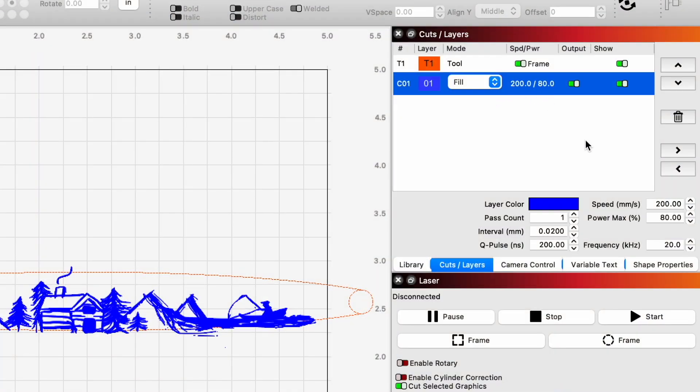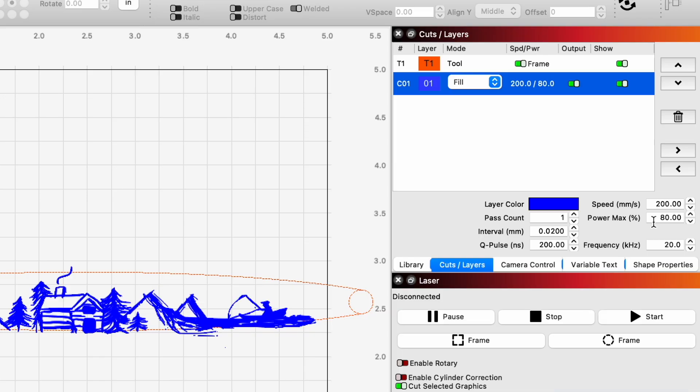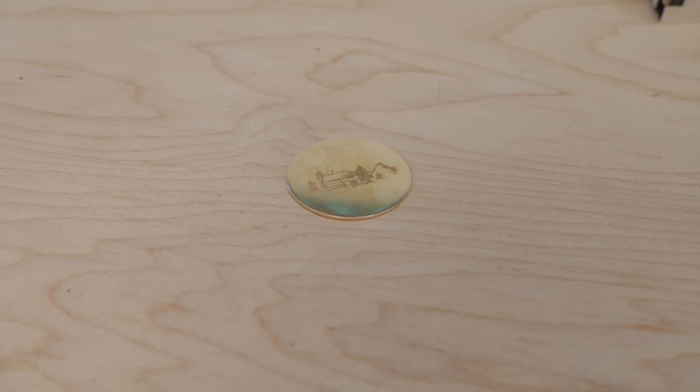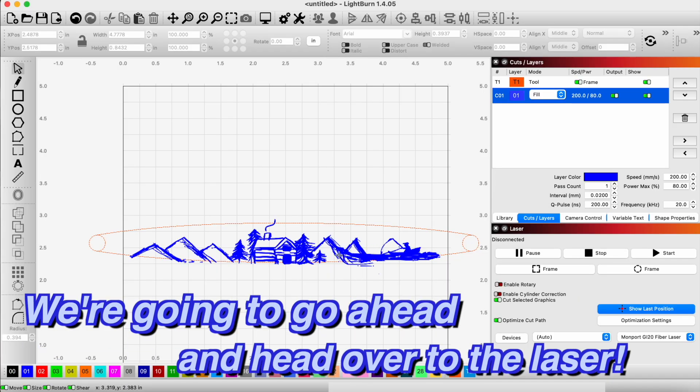And we did some tests on brass, and we found that these settings actually make a nice darker sort of engraving. You'll never get true black on brass, at least that we have found. But you can get some dark engraving marks, and you can also get really white engraving marks. And we found that this gives us dark engraving marks with these settings. So we're going to head over to the laser and get this engraved.